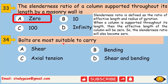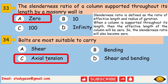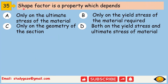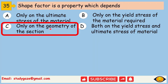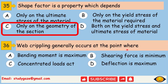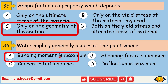Bolts are most suitable to carry axial tension. Next, shape factor is a property which depends only on the geometry of the section. Next, web crippling generally occurs at the point where a concentrated load acts.